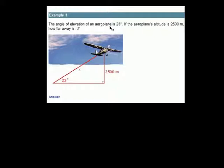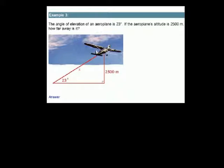It says the angle of elevation of an aeroplane — spelled A-E-R-O, probably British or Australian — is 23 degrees. The altitude is the height, perpendicular to the base — that's the altitude of the airplane, 2,500 meters. The question asks how far away is it — meaning the line of sight distance. You have to make a right triangle out of this situation.